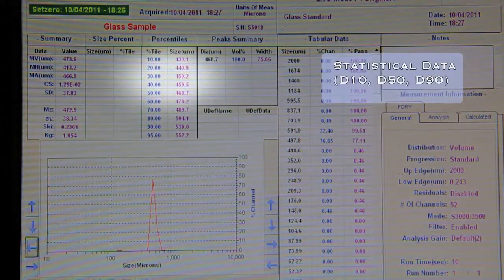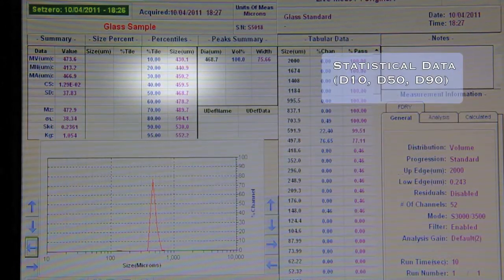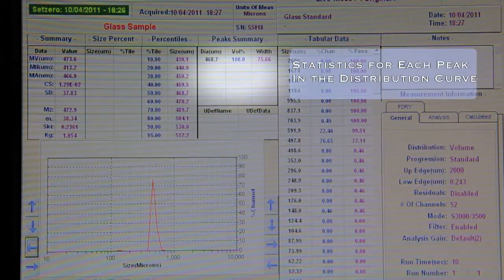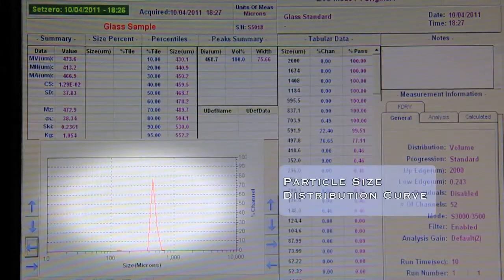It also shows information such as D10, D50, D90, information on each peak, as well as the particle size distribution curve.